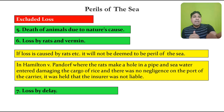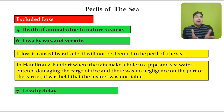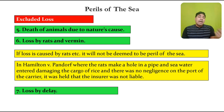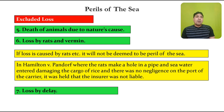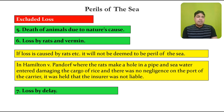Another excluded loss is loss by delay. If any loss is caused due to delay, it will be excluded loss. If the delay is unreasonable, then the insurance company will not be liable to pay such a loss, because loss by delay does not come under the category of perils of the sea. Only if the delay is reasonable may the insurance company be required to pay.